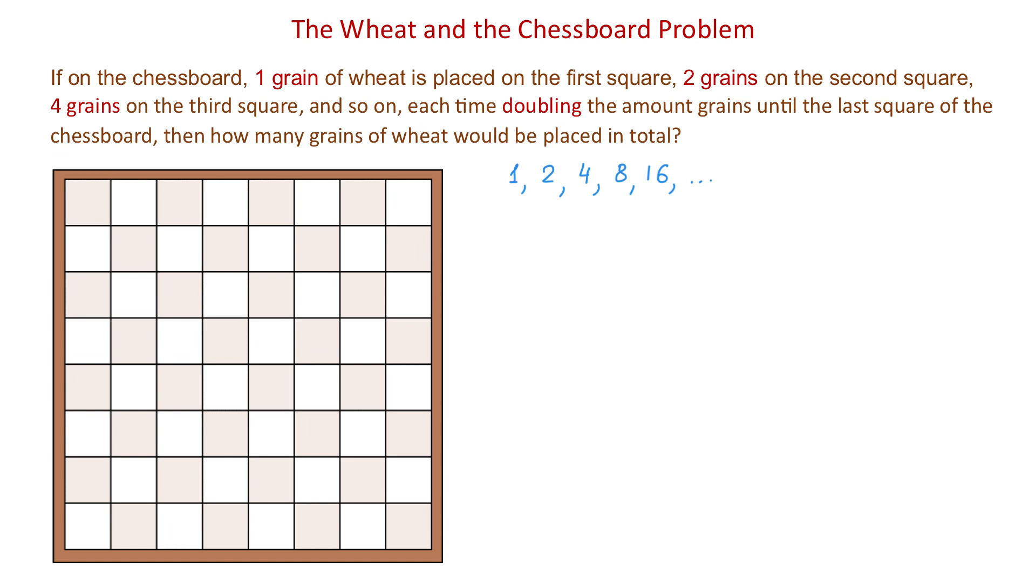So, to get the next number, each time we need to multiply by 2. Now, to represent the terms in a sequence, we usually use the letters a1, a2, a3, a4, a5, and so on.